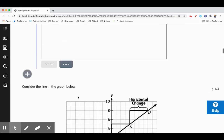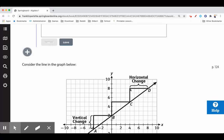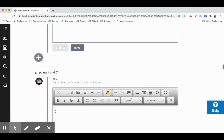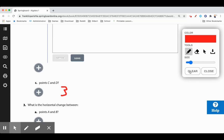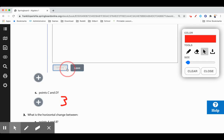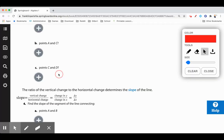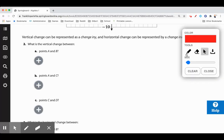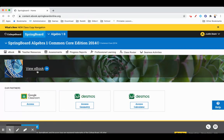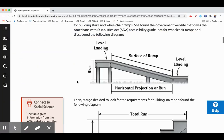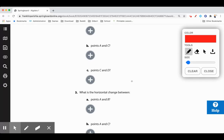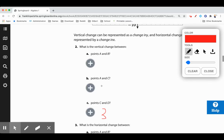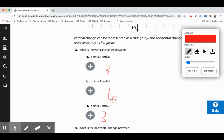And then points C and D. Vertically they are 3 apart. 1, 2, 3. So 3 for A and B, 6 for A and C, 3 for C and D.